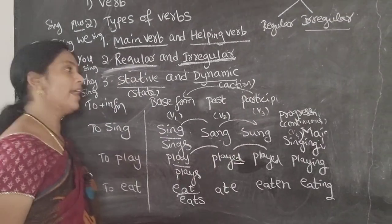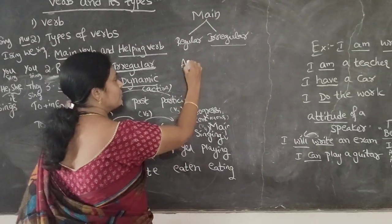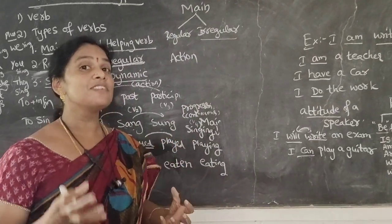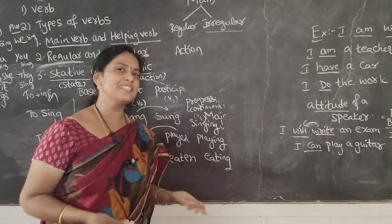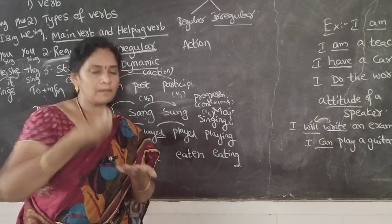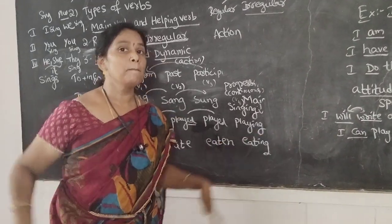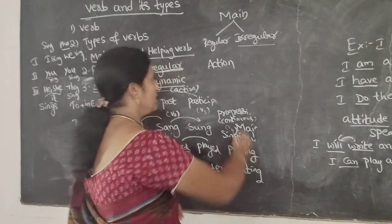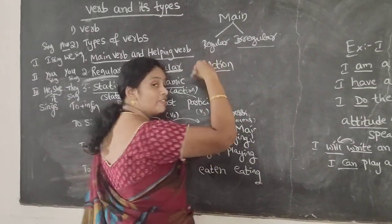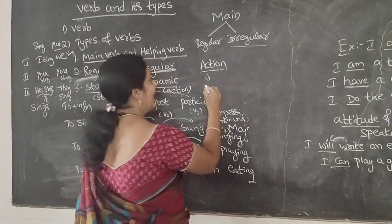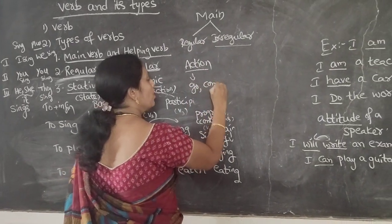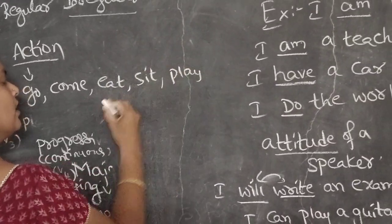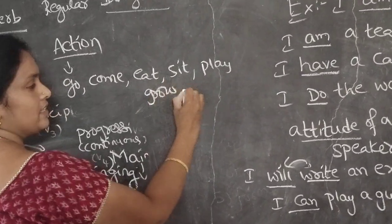What is an action word? An action word expresses physical activities — things we are doing. For example: eat — we are eating; swim — we are swimming; play — we are playing; go — we are going. Action words perform physical activities. Examples: go, come, eat, sit, play, grow. These action words can be seen — we can see these physical activities.